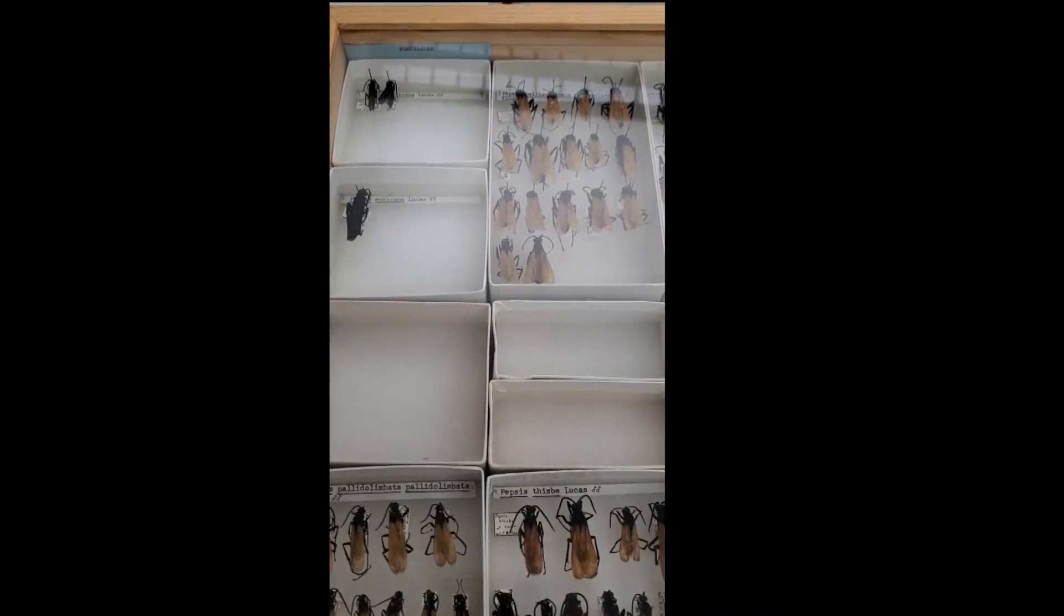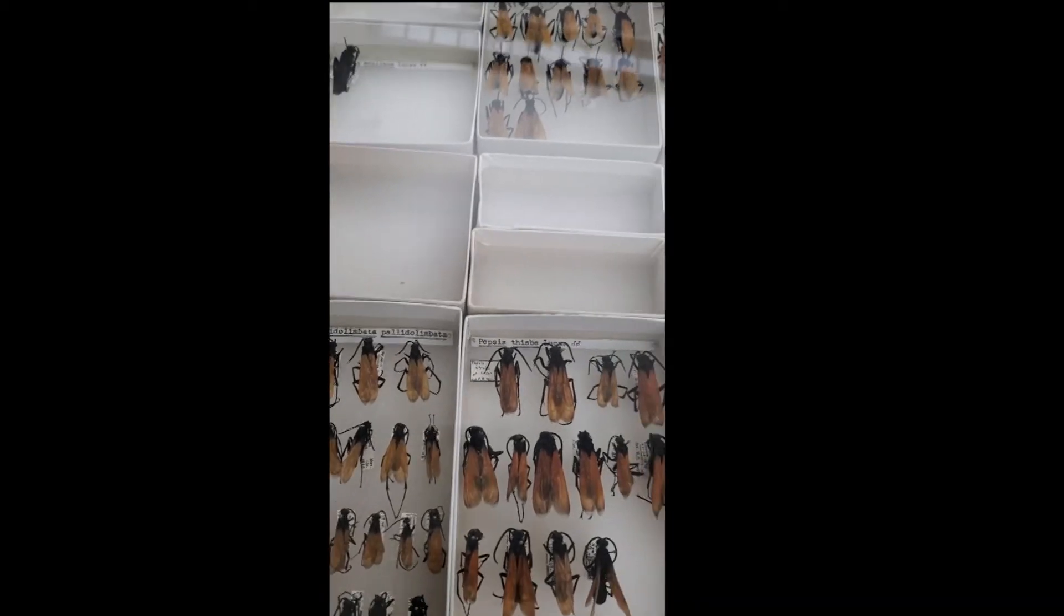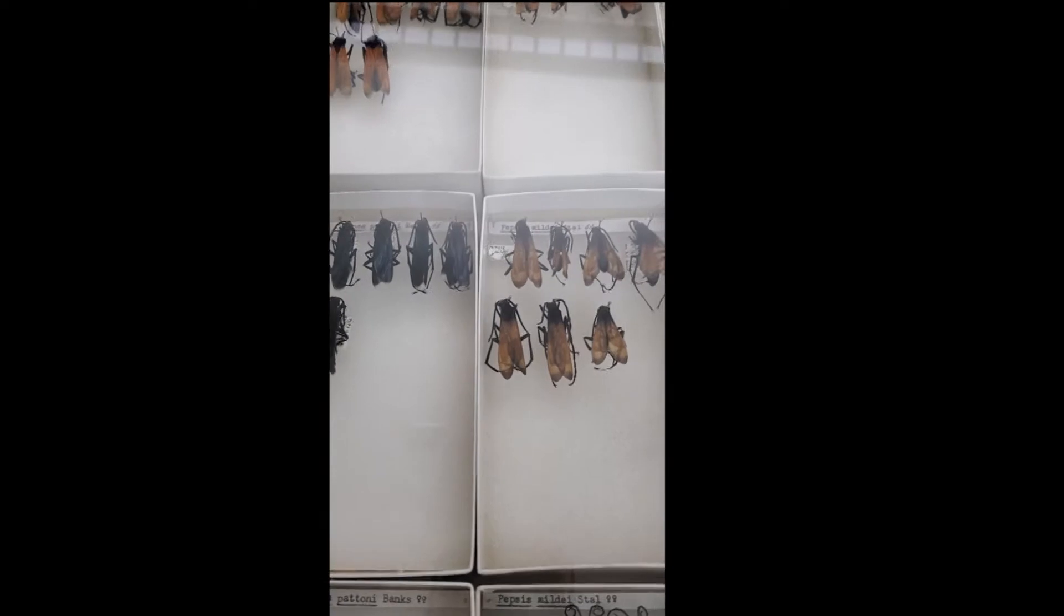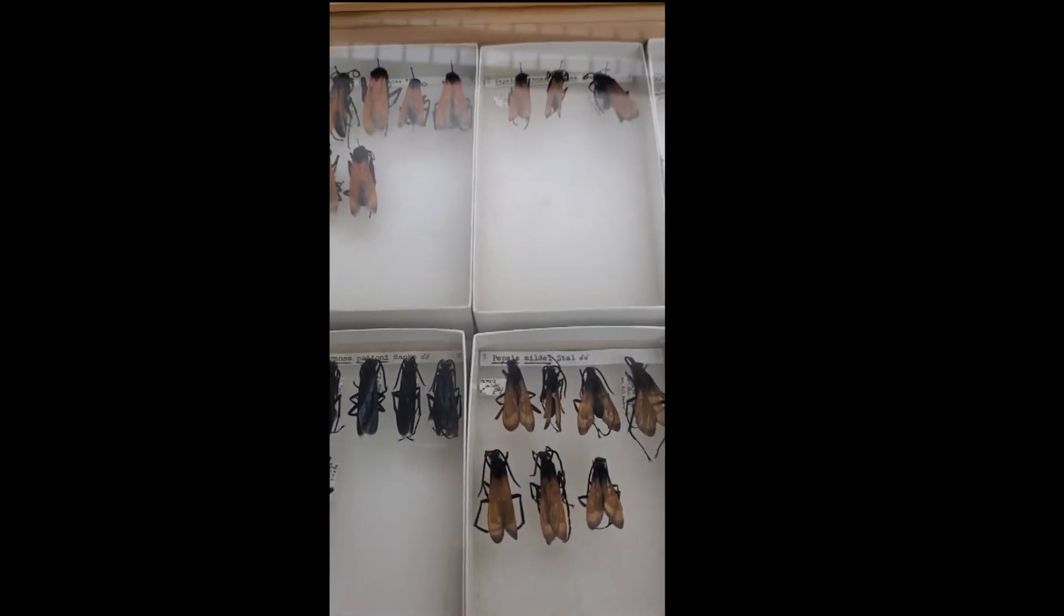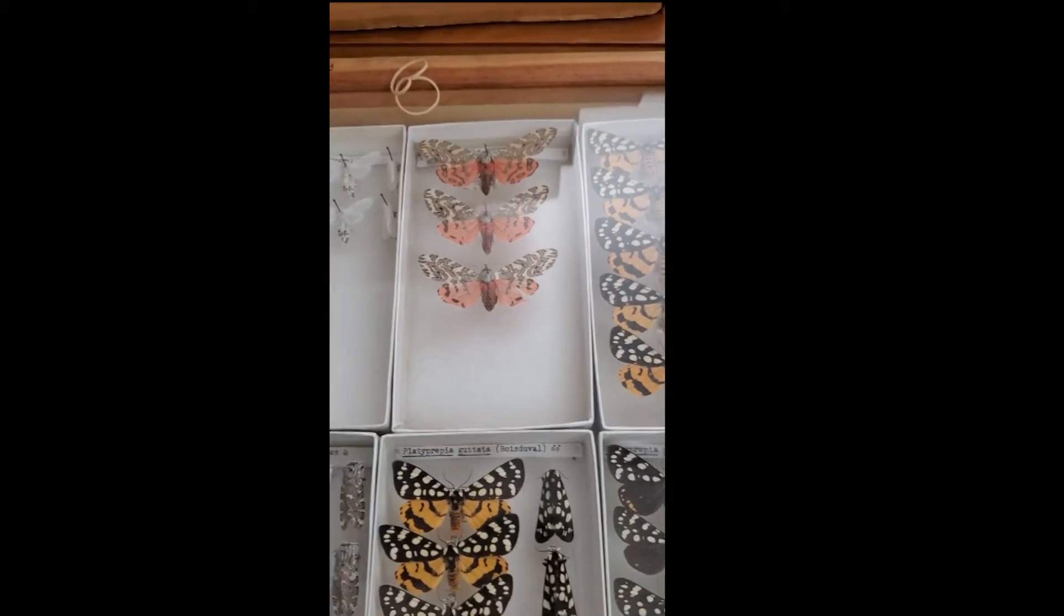This is a drawer of tarantula hawk wasps or spider wasps. We have a number of different species all over the state. It shows some of the variety of what we have in the collection.